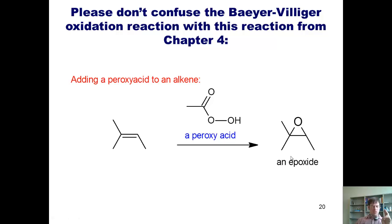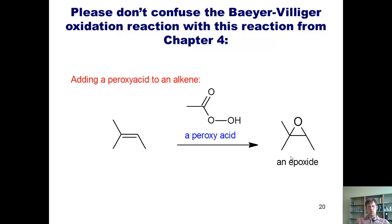You might wonder: what if you use a peroxy acid on a molecule that has both an alkene and an aldehyde or ketone in it? Will you get an epoxidation or a Baeyer-Villiger oxidation? The carefully calculated answer to that question is: yes — both can occur.